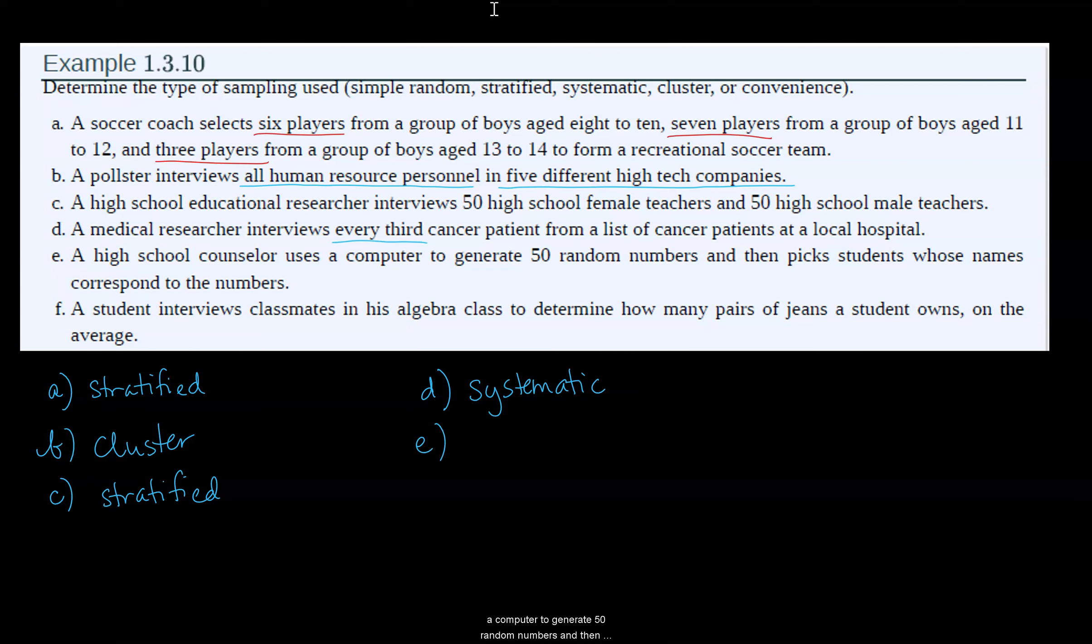E, a high school counselor uses a computer to generate 50 random numbers and then picks students whose names correspond to the numbers. Well, in this case, we're not doing some students from all the classes or all the students from some of the classes, so it's not stratified or cluster. We're not doing every so many students, so it's not systematic. This is a simple random sample. We're just generating 50 random numbers and then selecting those 50 students that correspond to those numbers.